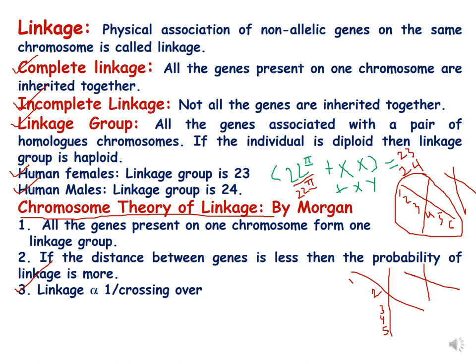The chromosome theory of linkage was given by Morgan. According to this theory, all the genes present on one chromosome form one linkage group.